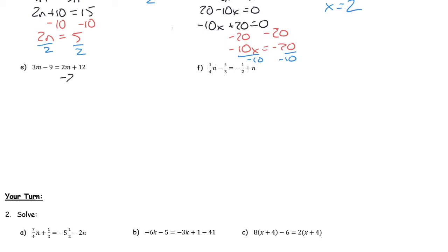For the next one: subtracting 2m from both sides gives m minus 9 equals 12. Adding 9 to both sides to isolate m gives m equals 21. That actually simplified down quite nicely — because the coefficient of m was just 1, it reduced to a type 1 equation.